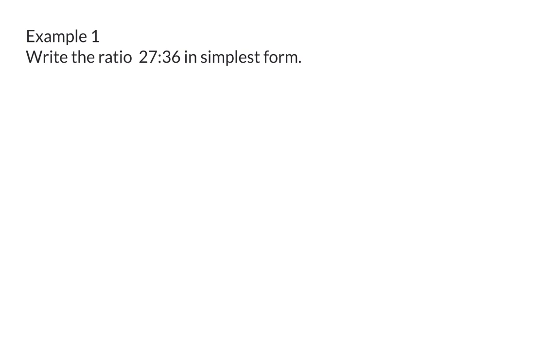Here we can now decide to keep the ratio written in ratio form as 27 to 36 or you can decide to rewrite it in fraction form. To simplify a ratio you need to determine the highest common factor and in this case the highest common factor is 9. If you are unsure about how to determine this highest common factor go and have a look at video 2 again.